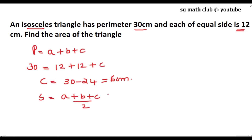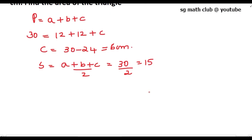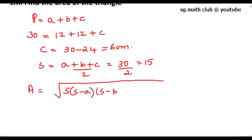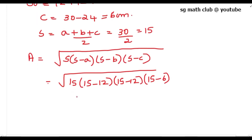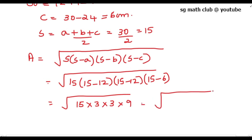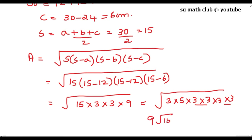The semi-perimeter s = (a + b + c) / 2 = 30 / 2 = 15 cm. Area = √(15 × (15 − 12) × (15 − 12) × (15 − 6)) = √(15 × 3 × 3 × 9). Writing this as √(3 × 5 × 3 × 3 × 9), we take two 3s outside to get 9√15 cm². The area of the triangle is 9√15 cm².